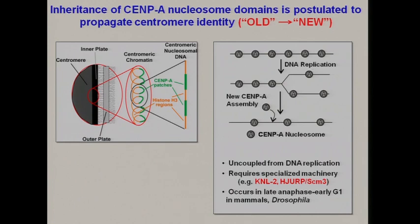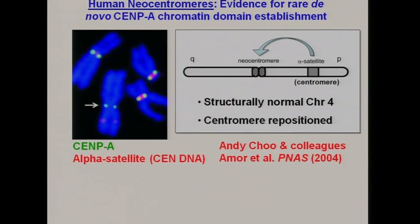This has been shown to be uncoupled from DNA replication itself. It occurs late in anaphase and early in G1 in mammals and Drosophila, and it's known that this process requires specialized machinery, which is also conserved, including a protein called KNL2. There's some evidence that this old-to-new hypothesis may not be entirely accurate, because there are some interesting cases of neocentromeres that occur in humans. For example, in a two-generation family, chromosome four shows that the alpha satellite DNA is still in place, but the CENP-A has moved to a new location — and this family is perfectly normal.